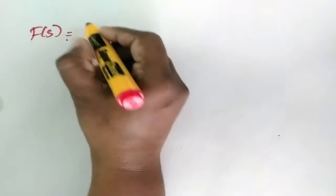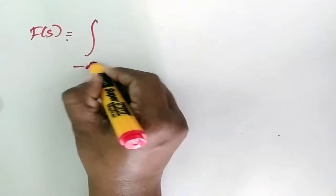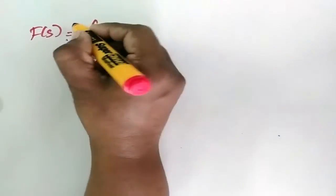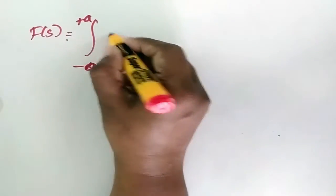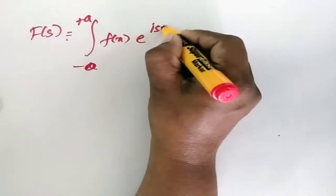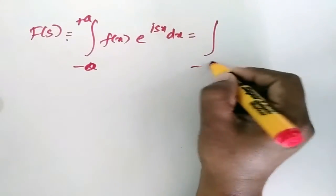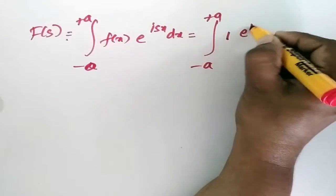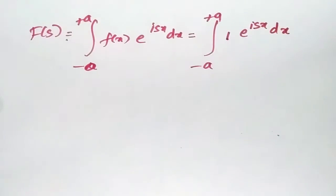Now, F(s) equals the integral with limits from minus a to plus a of f(x) e^(isx) dx. Since f(x) equals 1 on this interval, this becomes the integral from minus a to plus a of 1 times e^(isx) dx.